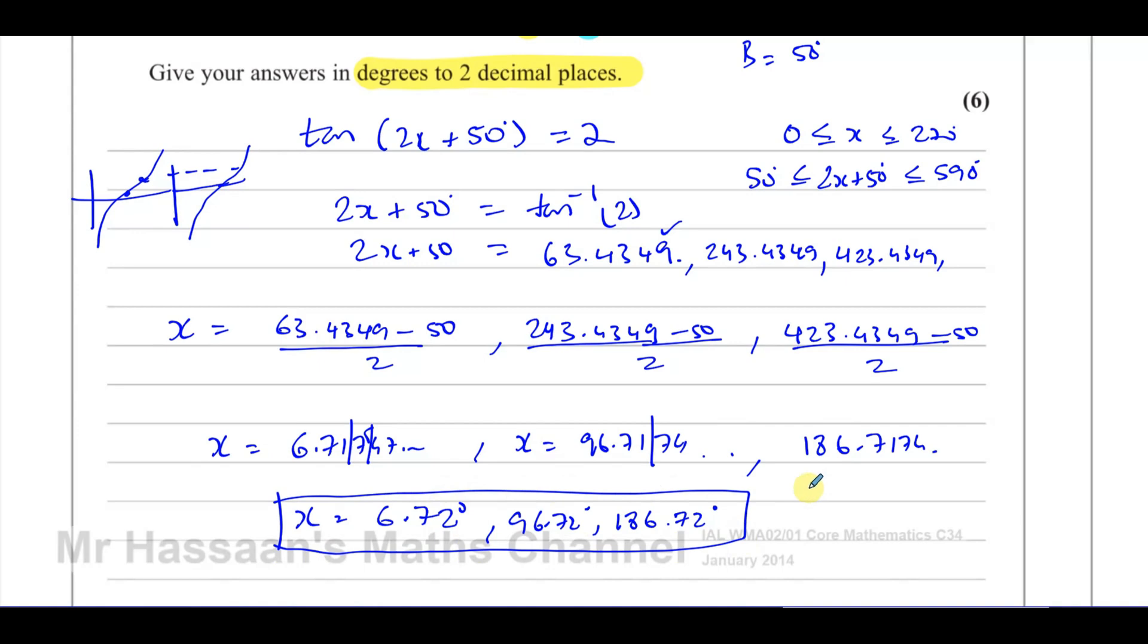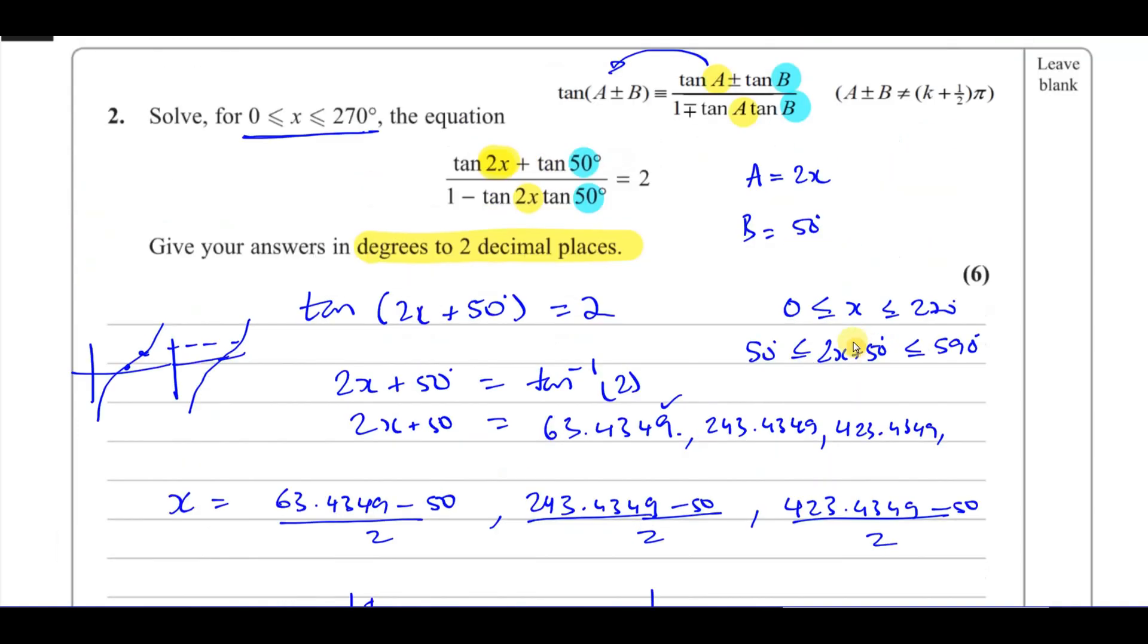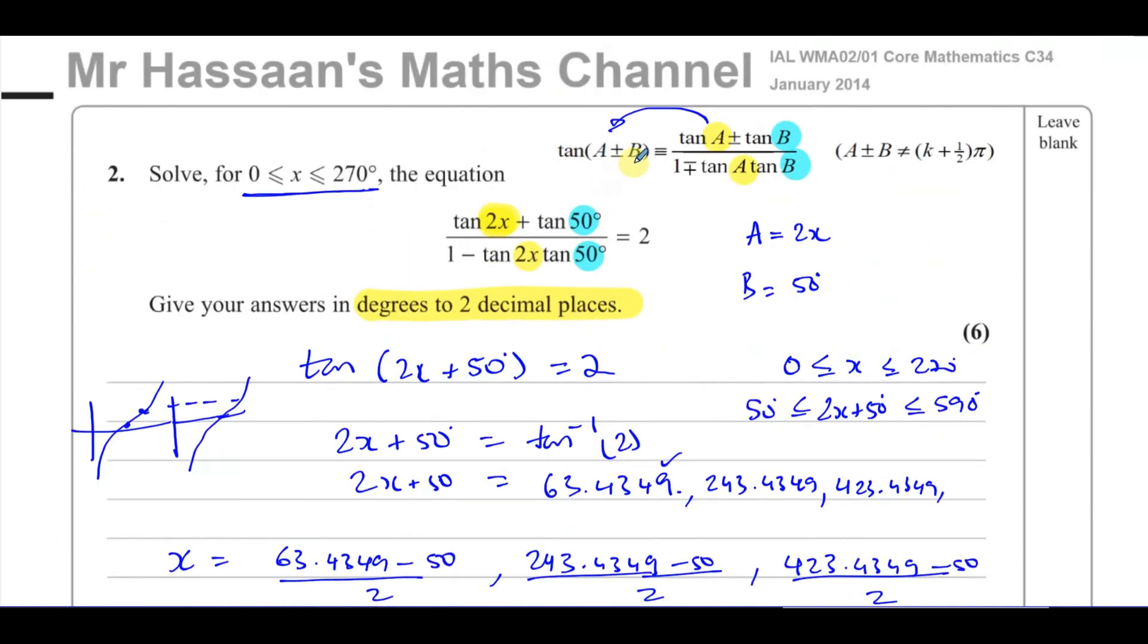And we have 186.72 degrees. So those are the answers in our range. Everything else would be outside of our range. And that concludes this question using the addition formula for tangent, which doesn't come out that often. So we should really know how to do this.